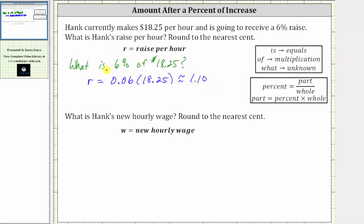More formally, using keywords to write an equation: what represents the unknown, the variable r; is means equals; 6% as a decimal is 0.06; of means multiplication, giving us times 18.25. So now we know Hank's raise is $1.10 per hour.